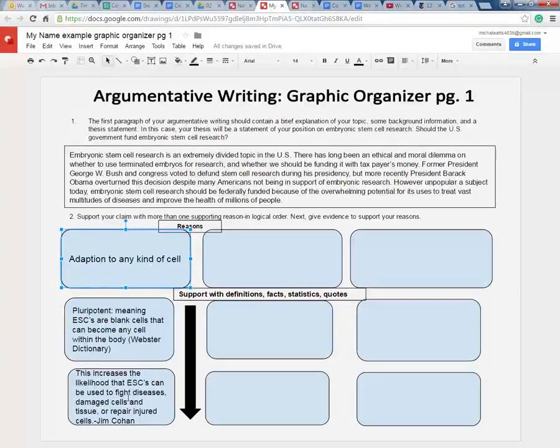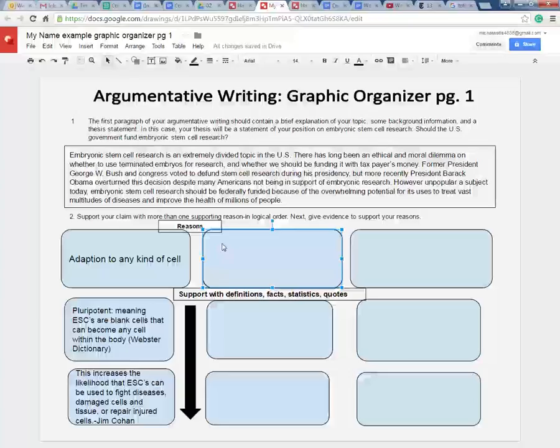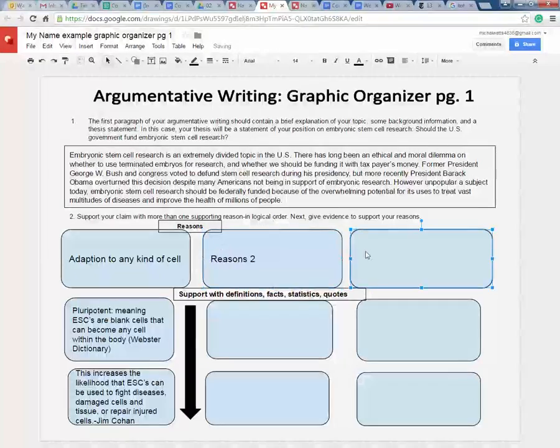She outlines that with the ability to become any type of cell, you can treat a range of diseases, damaged cells, or repair injured cells. Here she has a note that she's going to use Jim Cohan's article and cite sources from him. These other boxes are also writable, so you can put in reasons number two and reasons number three.